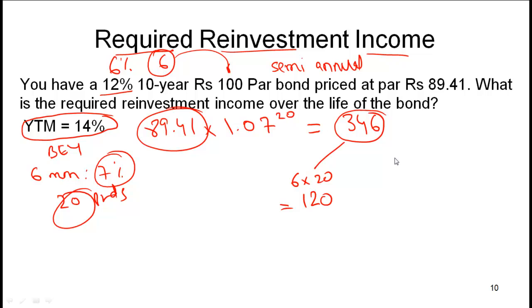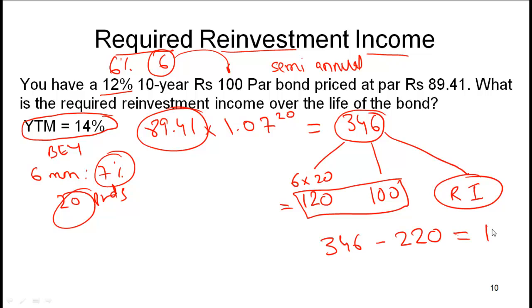Then you will also get the $100 par value back at the end, and then the final amount is what we call the reinvestment income. So this reinvestment income is simply equal to 346 minus the sum of these two which is 220.